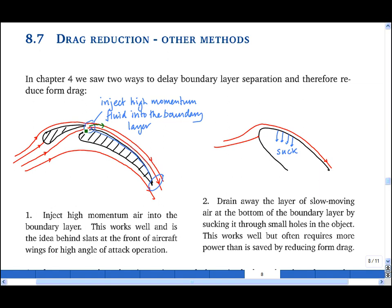The first of these methods works by injecting high momentum fluid into the boundary layer. The other one works by pulling the low momentum fluid out of the boundary layer, thereby forcing high momentum fluid to come in from the free stream.